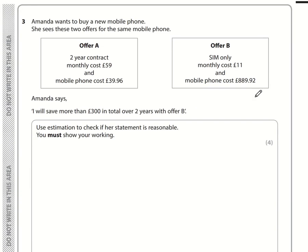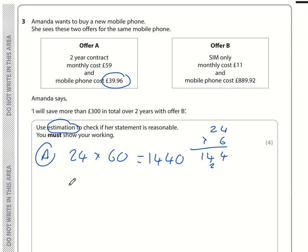Question number 3. Amanda wants to buy a new mobile phone. She sees 2 offers, Offer A and Offer B. She says she will save more than £300 if she goes with Offer B. Let's work out Offer A first using estimation. It's a 2 year contract, so 24 months multiplied by £60. 24 times 6 is 144, so 24 times 60 is 1440. The mobile phone costs £40. So the total is 1440 plus 40, which is £1,480.